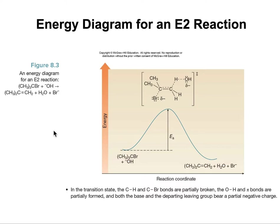Looking at the energy diagram for an E2 reaction: the reaction happens in just one step, and this right here is the transition state. As the new pi bond is forming, all the other bonds are breaking — the C-Br bond breaks, the C-H bond breaks, and the H-to-base bond forms. So we're forming one new sigma, forming a pi, and breaking two sigmas. Two bonds are forming and two bonds are breaking, which is why we have just one energy hump. This is the activation energy.